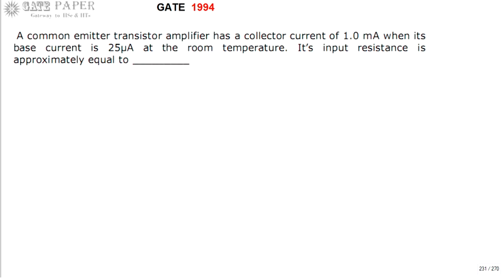Hello, we are discussing GATE 1994 EC paper and this question is related to analog circuits. A common emitter amplifier has a collector current of 1 mA when its base current is 25 uA at room temperature. Its input resistance is approximately.